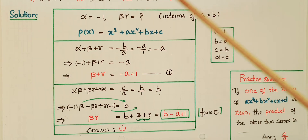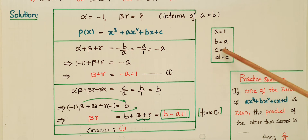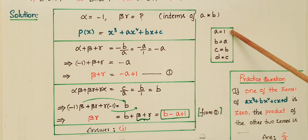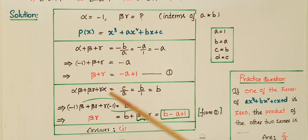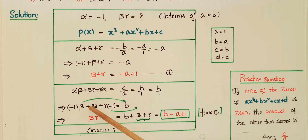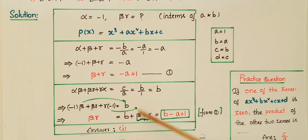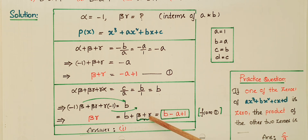We also know that αβ + βγ + γα = c/a = b/1 = b. Substituting alpha = −1: (−1)·β + βγ + γ·(−1) = b, which simplifies to βγ − (β + γ) = b, so βγ = b + β + γ. Substituting β + γ from equation 1, which is −a + 1: βγ = b + (−a + 1).